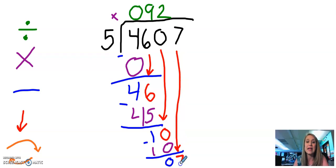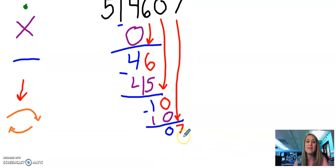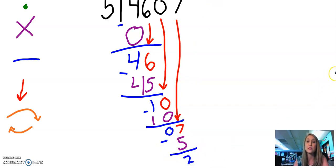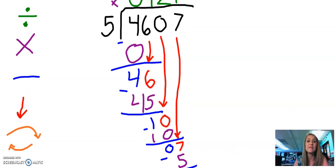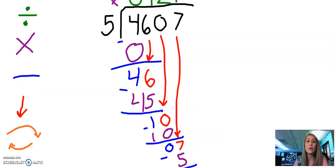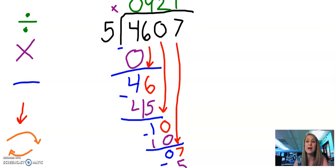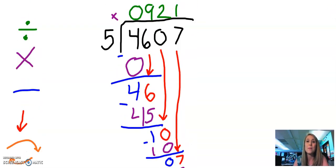The last step is going to ask myself, how many times can five go into seven? I know it can only go in one time. I multiply one times five and that gives me five. I subtract seven minus five and that gives me two. Is two less than my divisor five? It is. So because there's nothing else for me to pull down, that becomes my remainder.